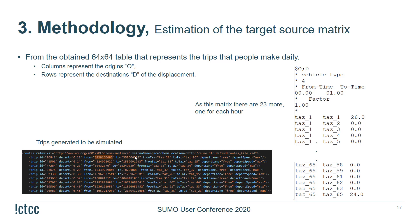For the estimation of the target source matrix, from the obtained 64×64 matrix that represents the trips people make daily, a configuration file is produced where the first column represents the origin zone, the second column represents the destination of the displacement, and the third column gives the quantity of vehicles that will make that trip.